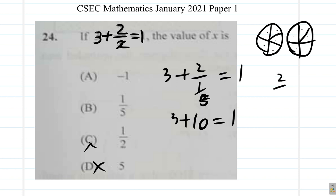Or you could say 2 over 1 fifth is the same as 2 multiplied by 5 over 1. Because when you have a number over a fraction, it's the same as the number times the reciprocal of a fraction. So 2, 5, 10. Is 3 plus 10 equal 1? No. That rules out B. Couldn't be B.